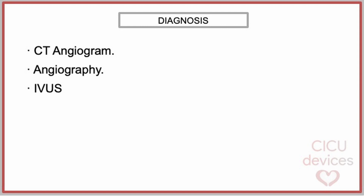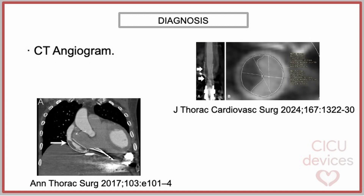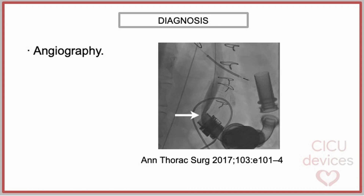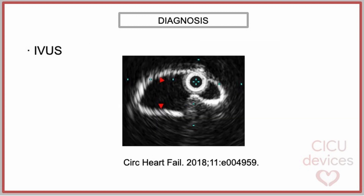To diagnose extrinsic compression, CT angiogram, angiography, or IVUS can be used. These are CT images showing extrinsic outflow graft obstruction. The diagnosis can also be performed through graft angiography. IVUS has been described as a highly useful imaging modality for distinguishing graft thrombosis from extrinsic compression, which can be confusing on CT scans.